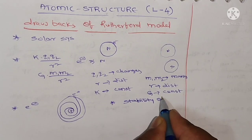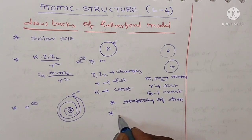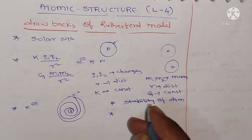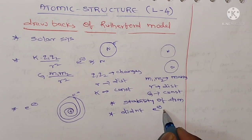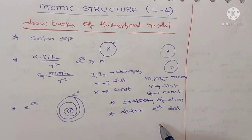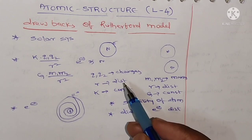Rutherford also did not explain how electrons are distributed around the nucleus. So these are the drawbacks of the Rutherford model.